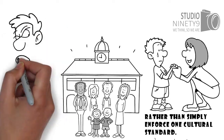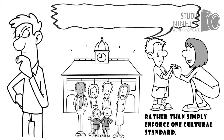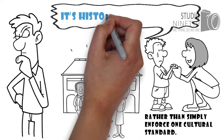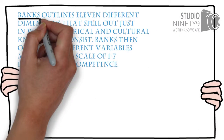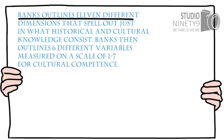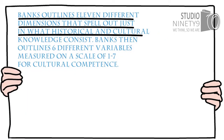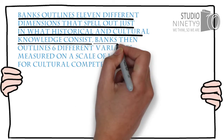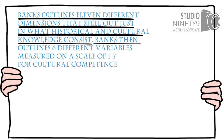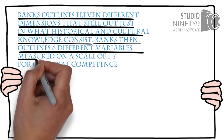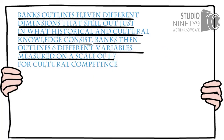So what exactly do you need to know about an ethnic group to understand its history and culture? Banks outlines 11 different dimensions that spell out just what a historical and cultural knowledge should consist of. Banks then outlined six different variables, measured on a scale of 1 to 7, for cultural competence for teachers.